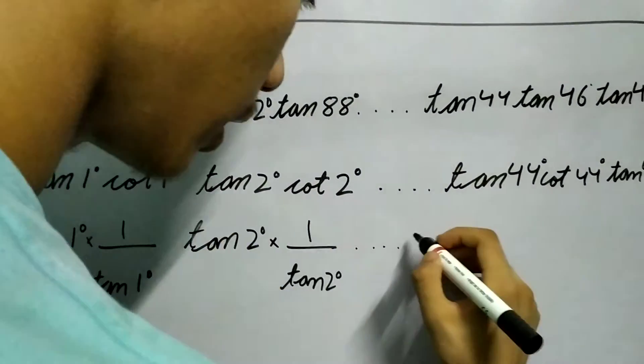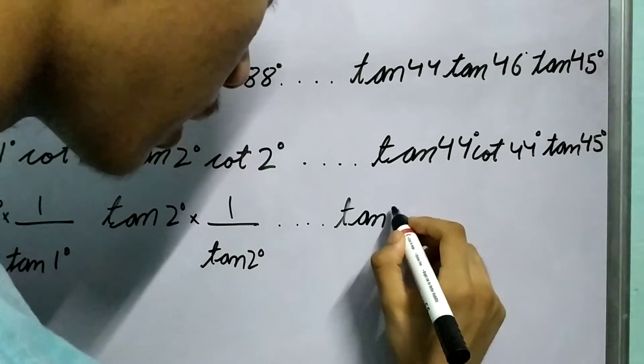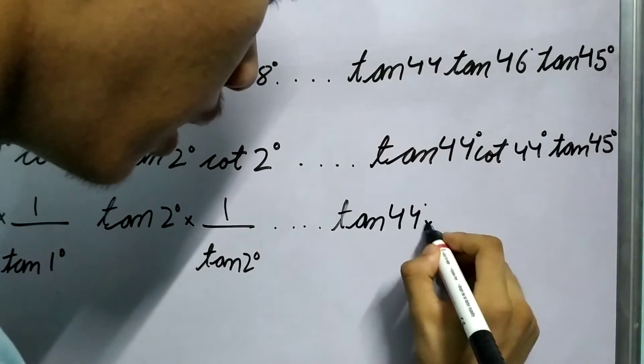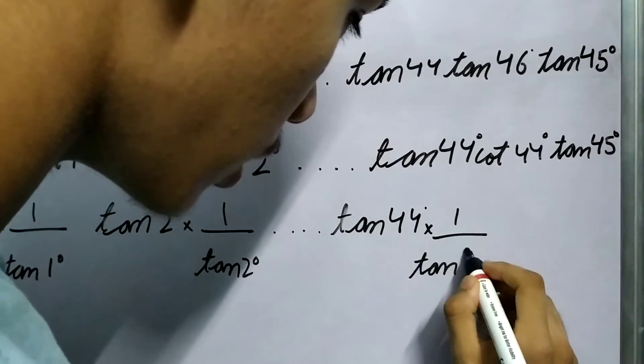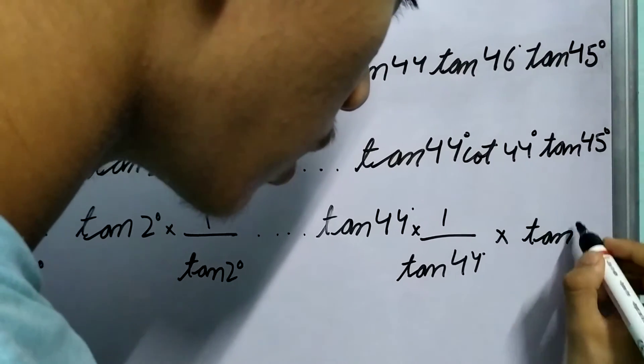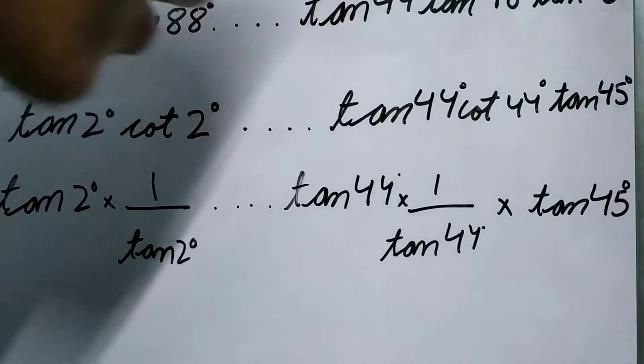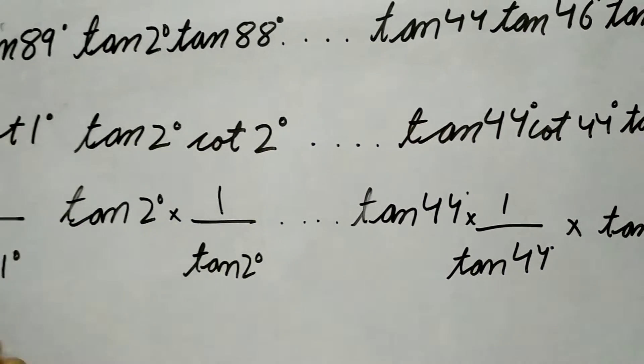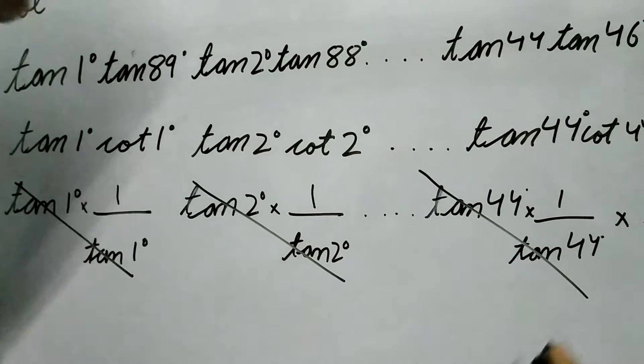And tan 3° · (1/tan 3°), and so on till tan 44° · (1/tan 44°) · tan 45°, right?